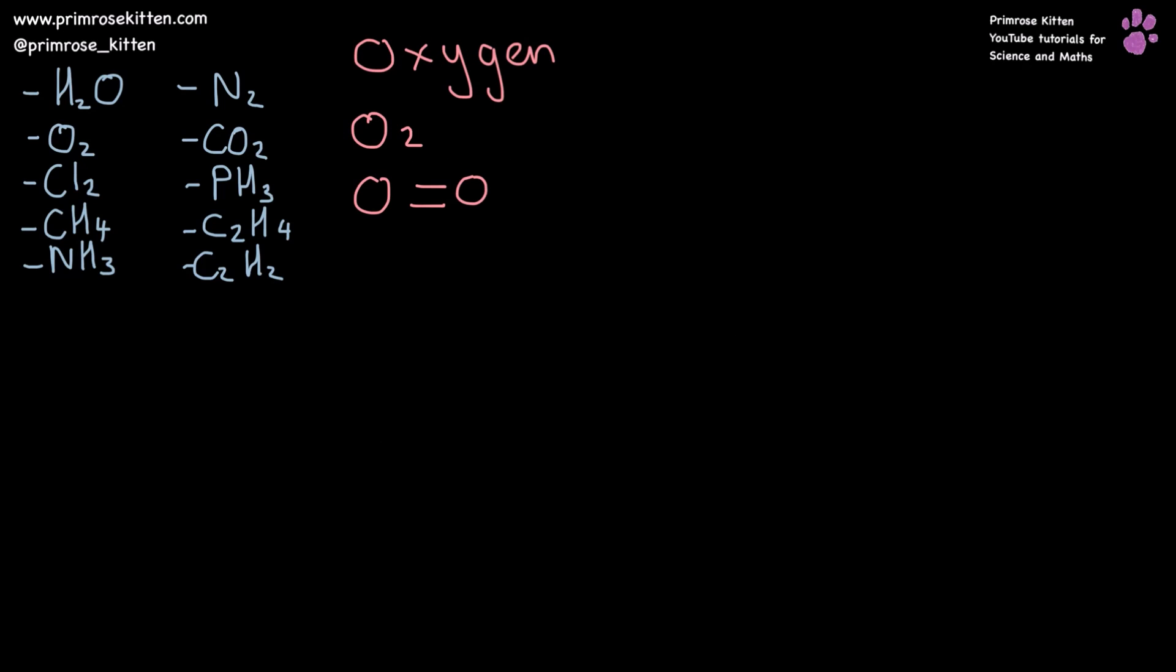Oxygen is double bonded oxygen. You can see the double bond indicates there are going to be four electrons in the middle, one, two, three, four, and then oxygen has six electrons on its outer shell. So it needs four more around the edge.